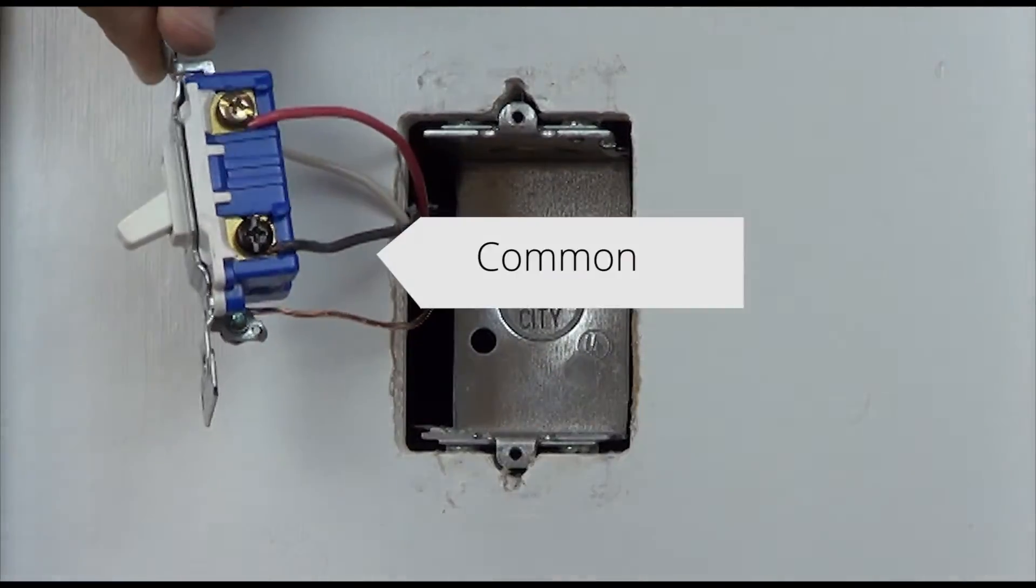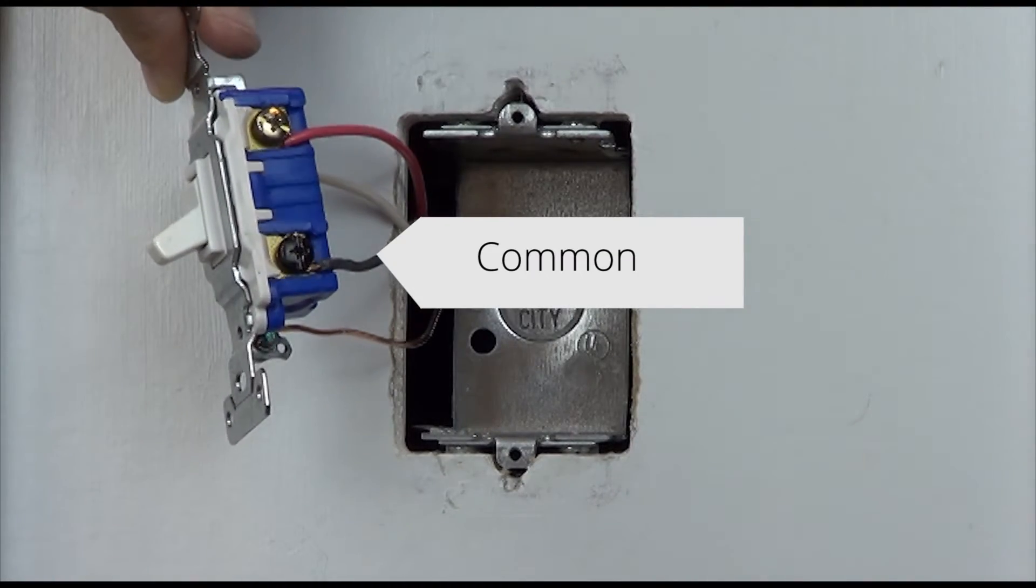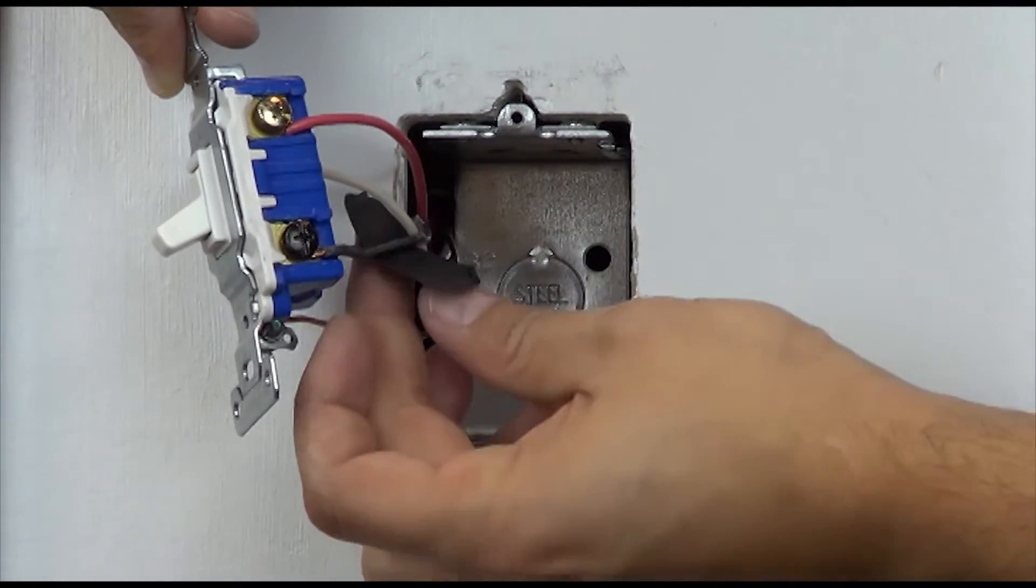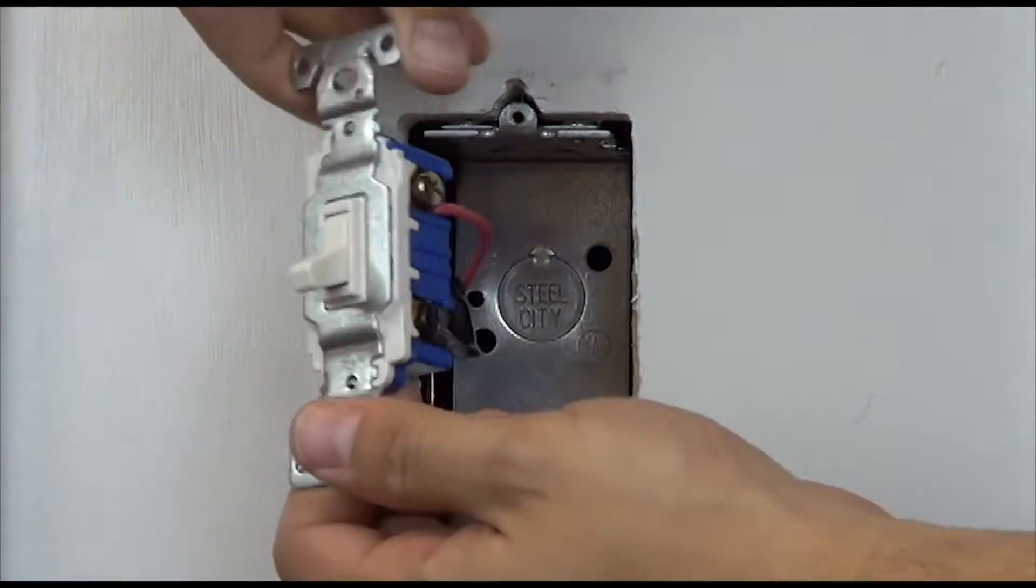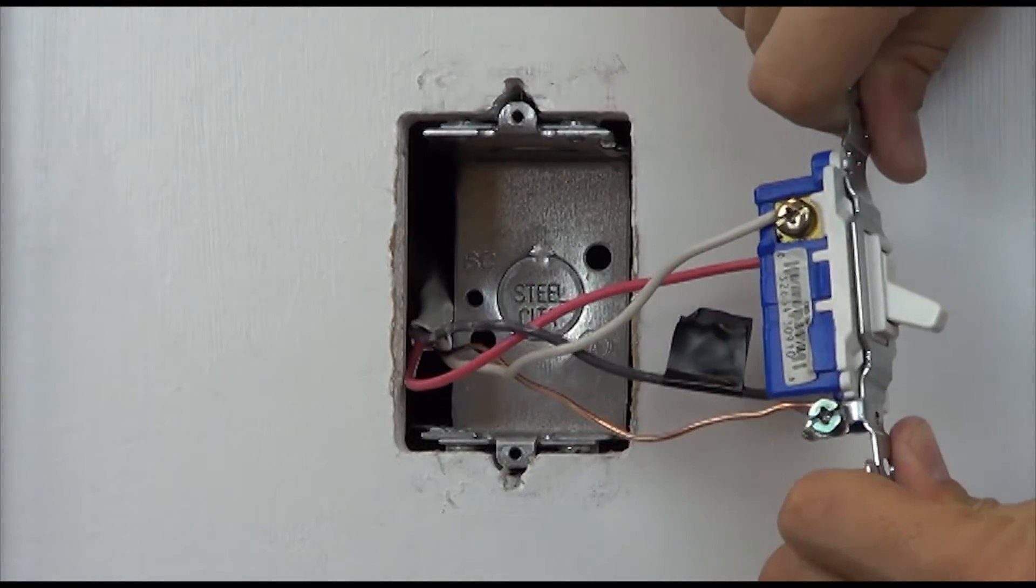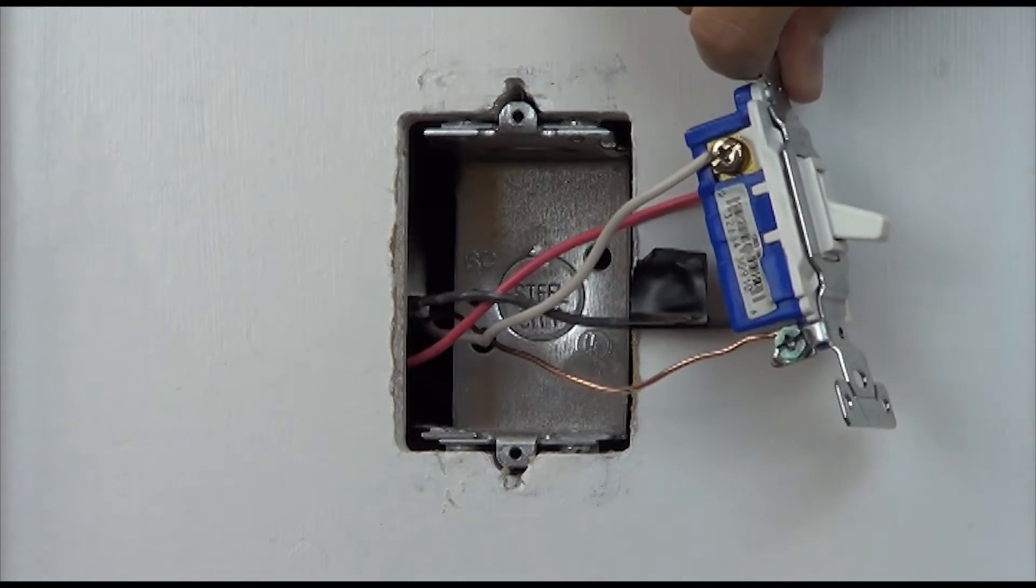Before disconnecting your old device, look at the screw colors on the side of the switch. Take a piece of electrical tape and tag the wire connected to the black screw. Knowing which wire this is will be important when hooking up your new dimmer.